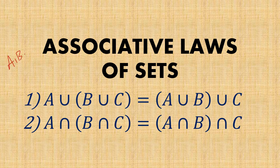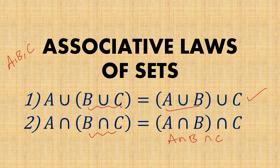Let us consider three sets: A, B, C. So, if you take A union with B union C, it is nothing but A union B, then you take the union with C set. Also, what is the second associative law? A intersection with B intersection C is nothing but A intersection B, then intersection with C set. So, let us see what is meant by associative laws, how to prove them, and let us look at some examples.